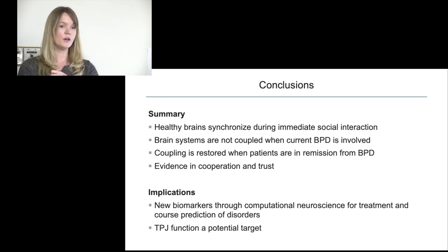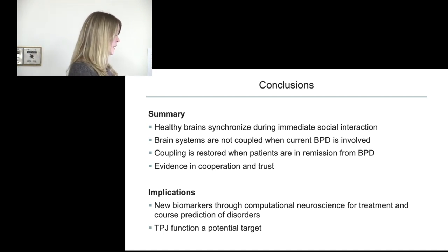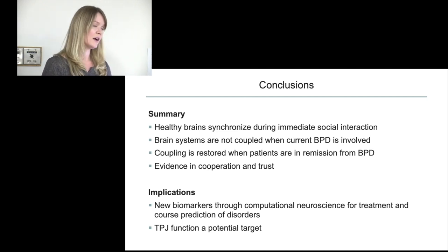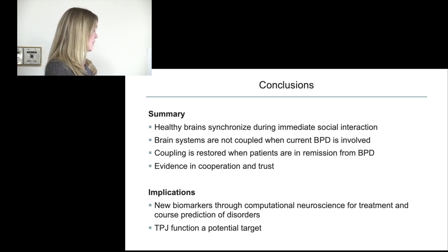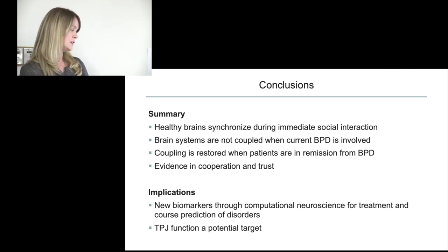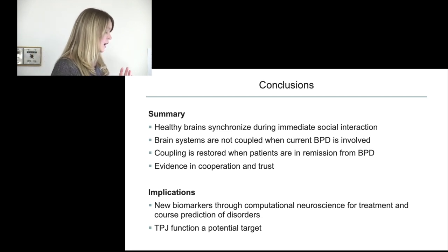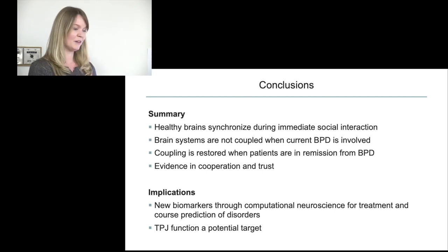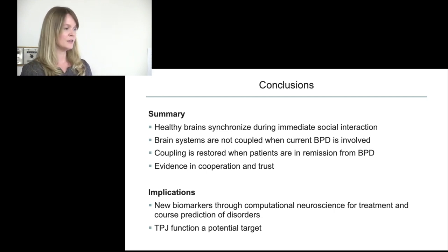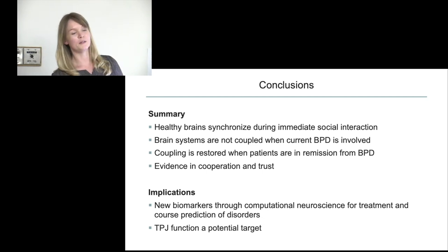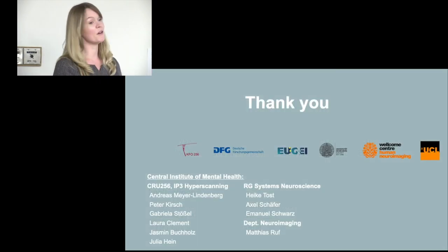To summarize: neural synchrony is a phenomenon that happens when we interact with others. It is sensitive to social interaction disorders, making it potentially useful in a clinical context. We've seen it across different paradigms, and we hope to use it in a computational approach going forward — aligning with work like Maxwell's — to gain more insights on the brain, social interaction disorders, and ultimately better treatments. Thank you very much.